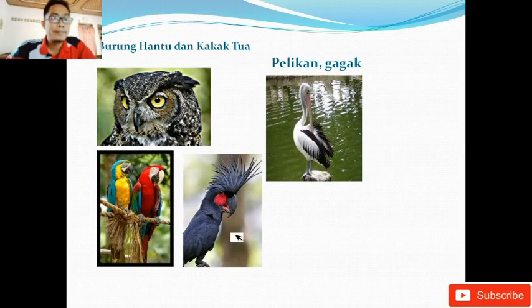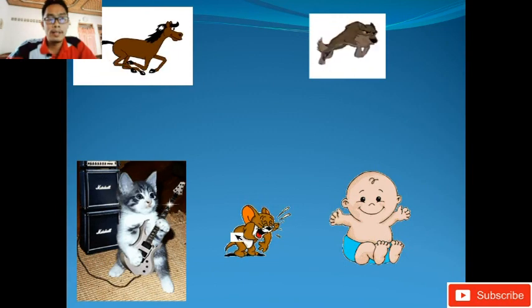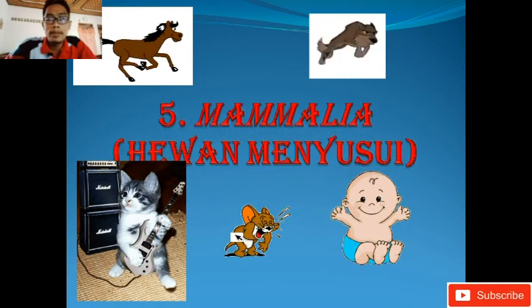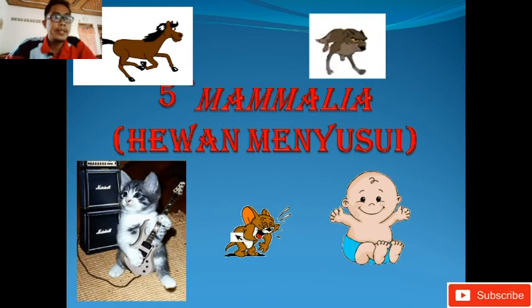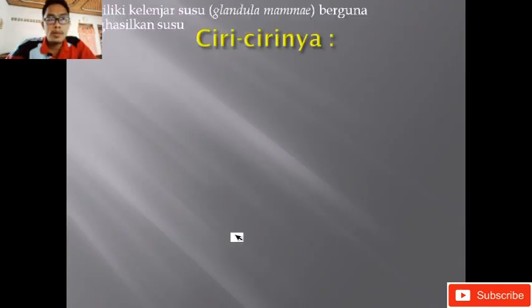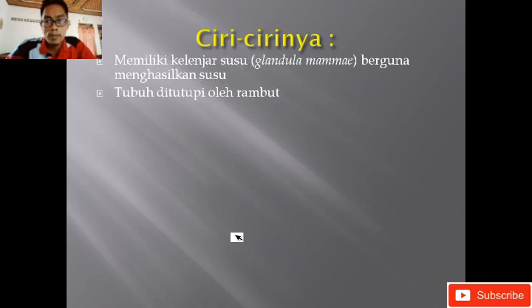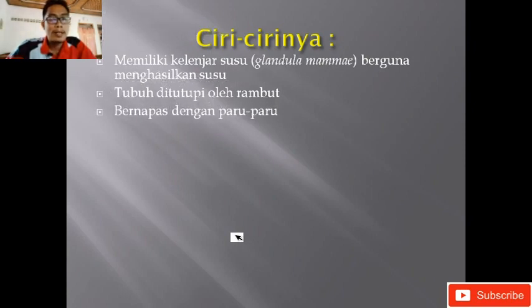Yang kelima adalah Mamalia, yaitu hewan menyusui. Ciri-cirinya: memiliki kelenjar susu yang disebut glandula mammae, fungsinya untuk menghasilkan susu terutama pada yang betina. Tubuh ditutupi oleh rambut — kalian perhatikan sendiri tubuh kalian pasti ada rambutnya, termasuk mamalia lain seperti kucing, kambing, kerbau, sapi, dan sebagainya. Yang ketiga, bernafas dengan paru-paru.